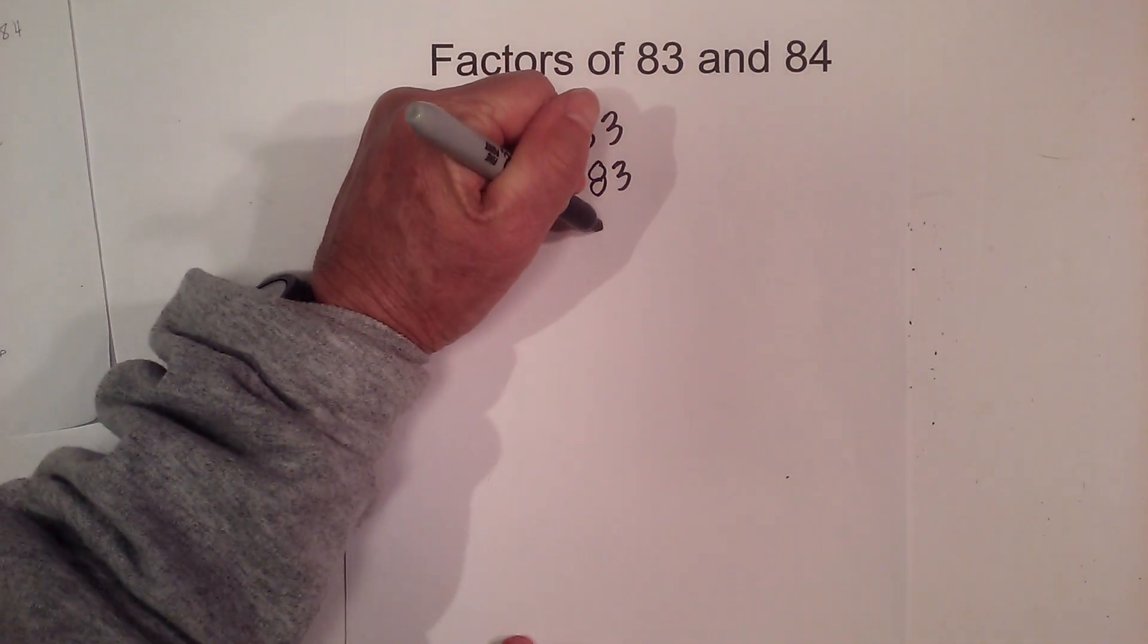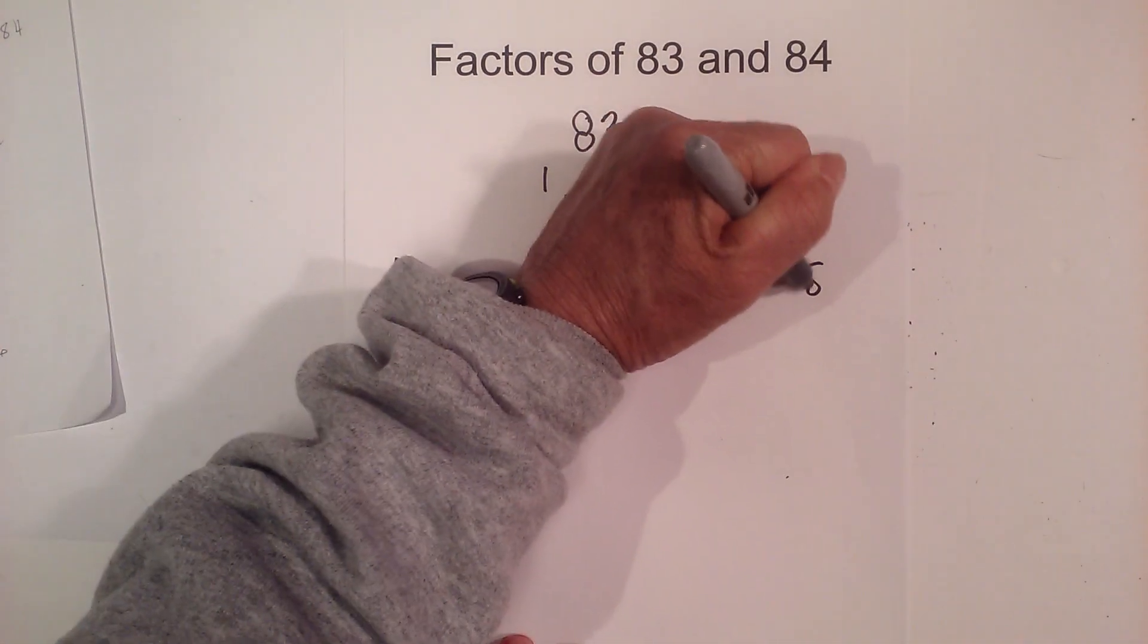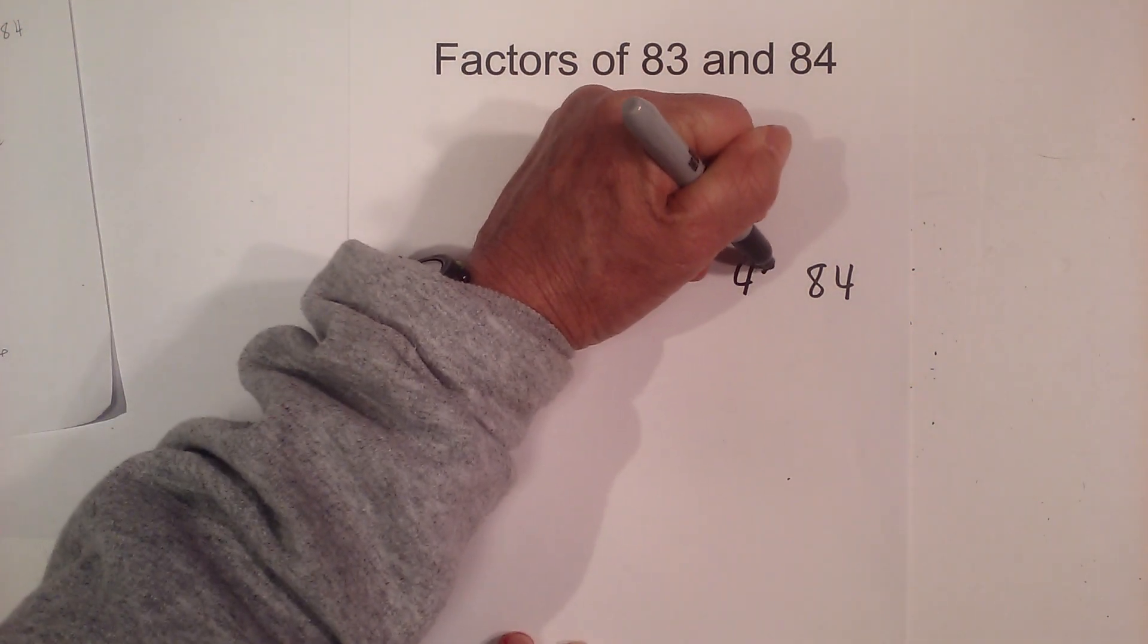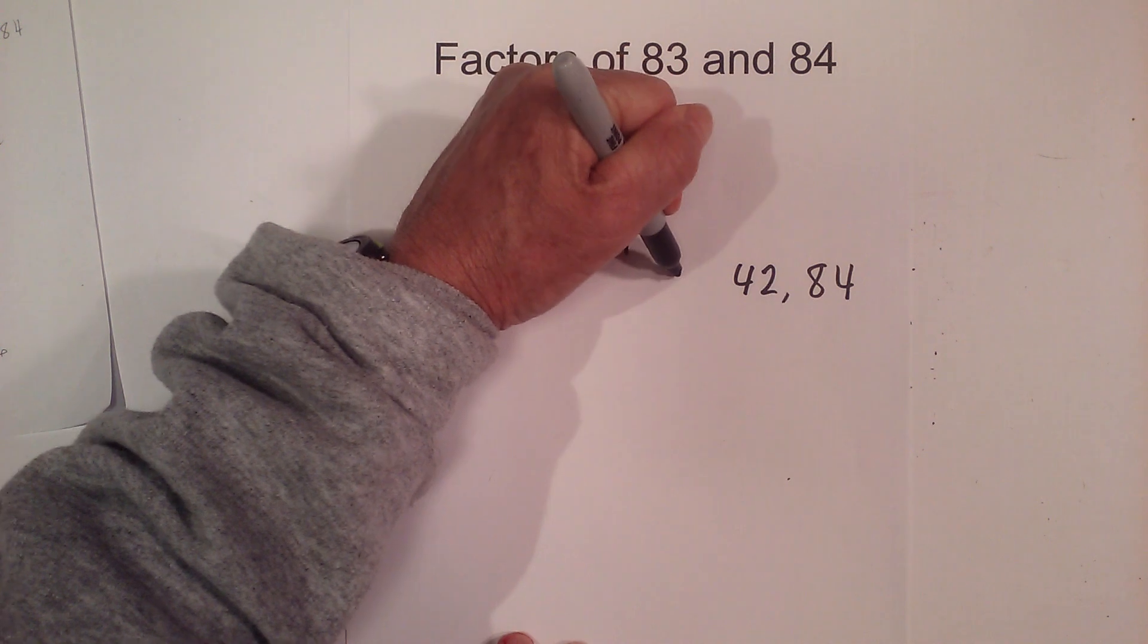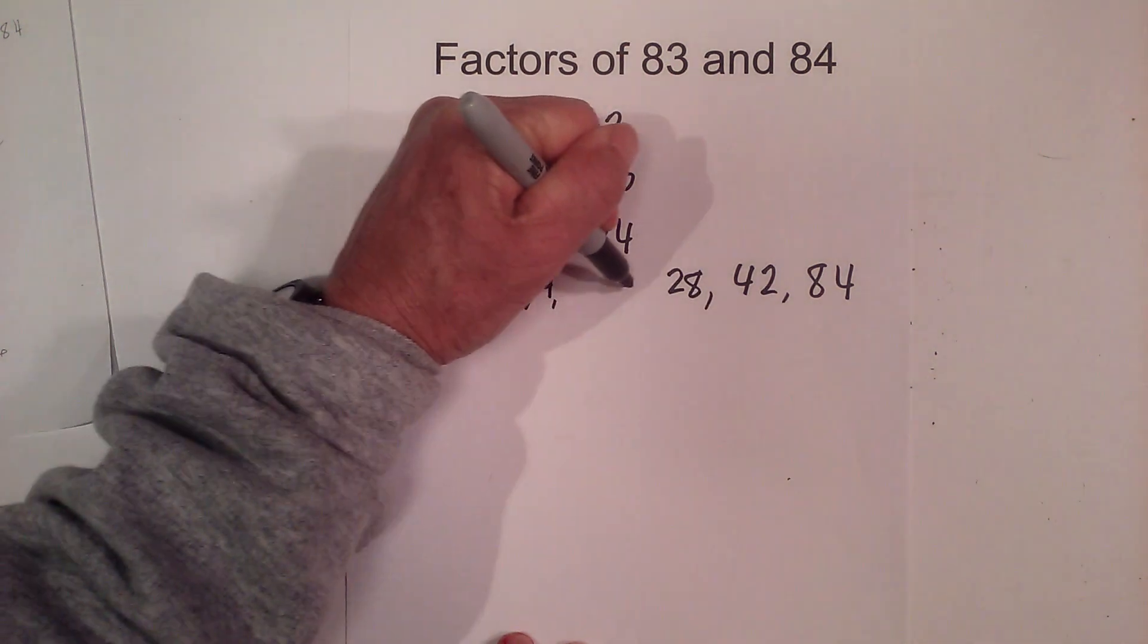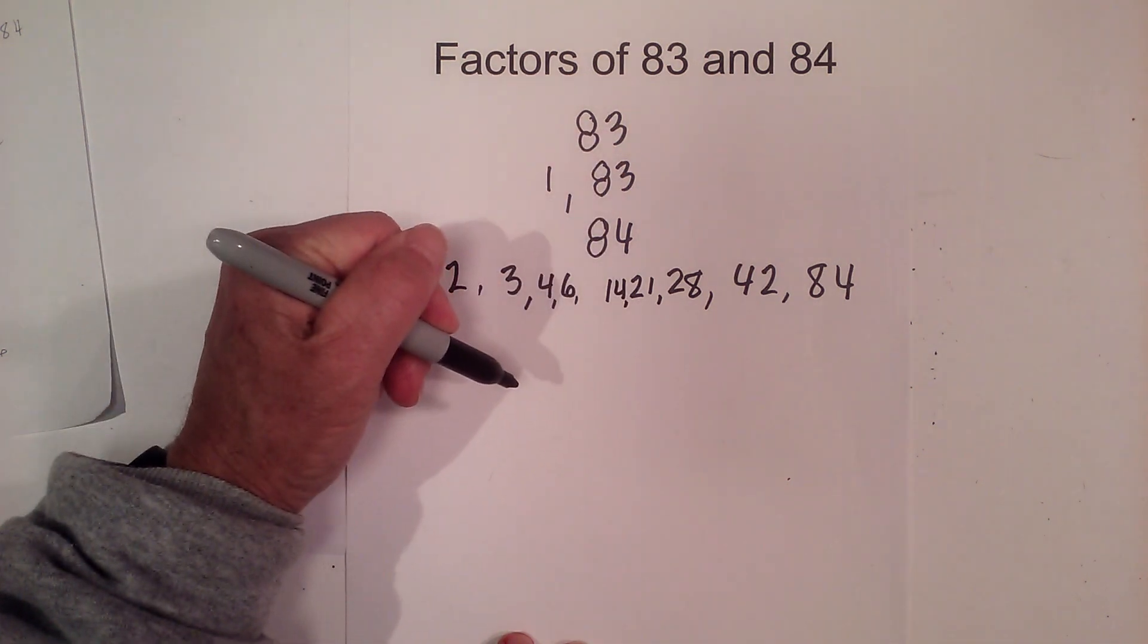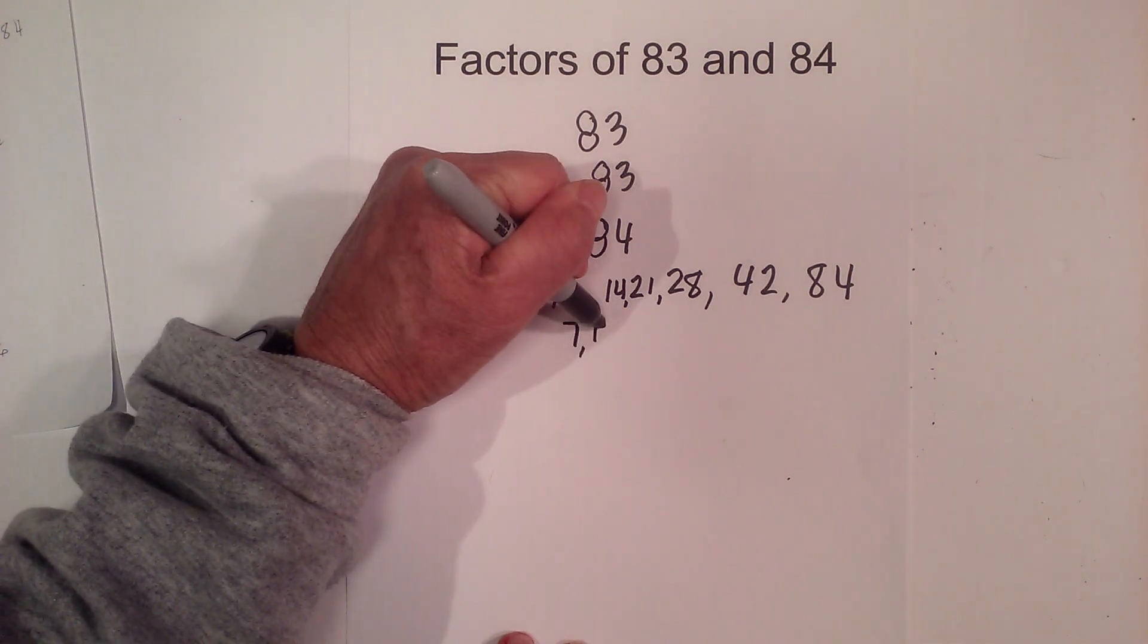Now 84 is a little bit different so let's start with 84 and I'm going to begin with 1 times 84. Then after that we have 2 times 42. Next we have 3 times 28. Next 4 times 21. 6 times 14. I'm running out of room in the middle. And then 7 times 12.